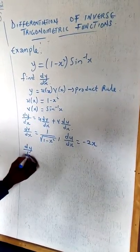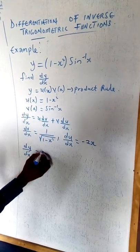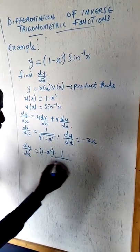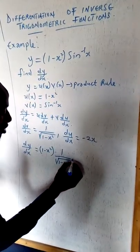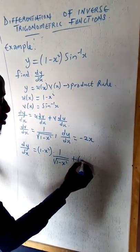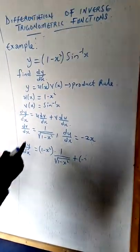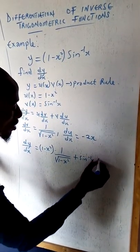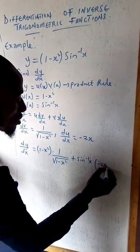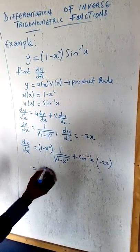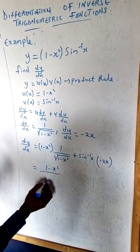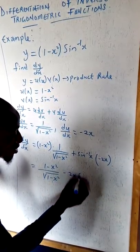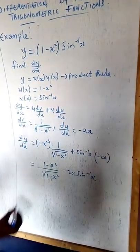Substituting into the product rule, dy/dx equals u times dv/dx plus v times du/dx. That gives us (1 minus x squared) times [1 over square root of (1 minus x squared)] plus arcsin(x) times (minus 2x), which simplifies to (1 minus x squared) over square root of (1 minus x squared), minus 2x arcsin(x).